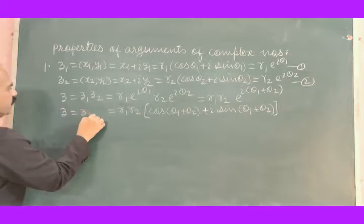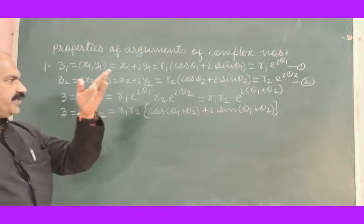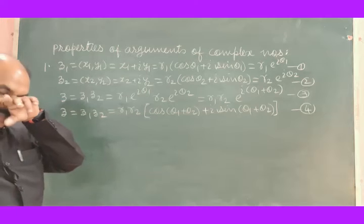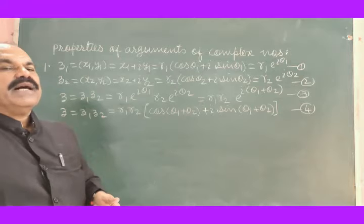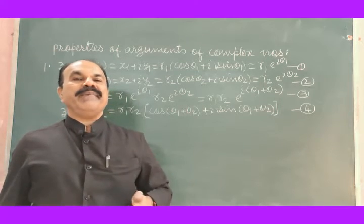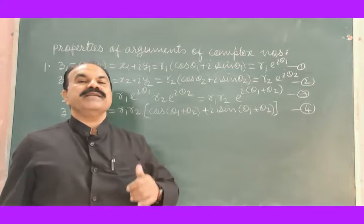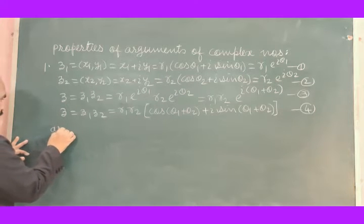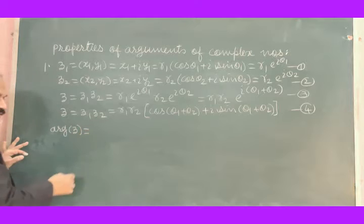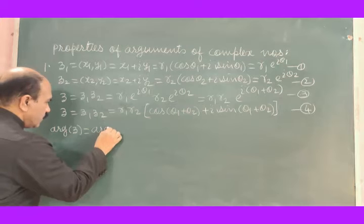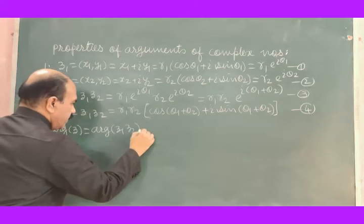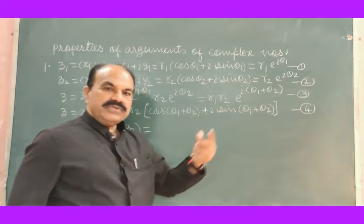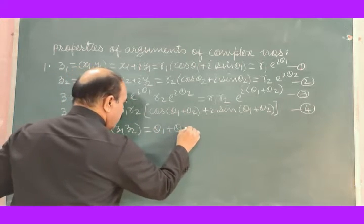So Z equals Z1 into Z2. Write this as equation number 3 and equation number 4. We have made the definition of argument of a complex number while talking about the Argand plane, Argand diagram, complex plane, Gaussian plane. Taking the argument of the product Z1 Z2, that is the argument of Z, we get θ1 plus θ2.